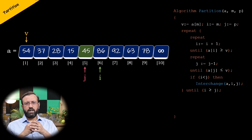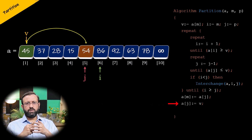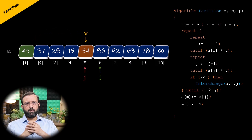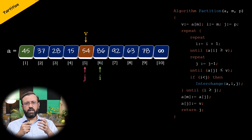Therefore, we will now assign the element at index J to the element at index M, which is the pivot element, using the statement A of M assigned A of J. Then we will assign the pivot element, that is element V, to the element at index J, using the statement A of J assigned V. At this stage, we found the position of the pivot element and placed the pivot element in its position. Finally, we will return index J, which is the index of the pivot element. This is the partition algorithm, where all elements before the pivot element V are lesser than it, and all elements after are greater.